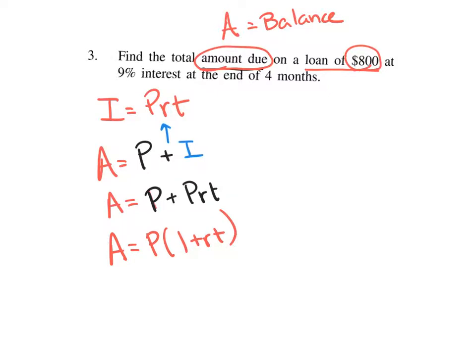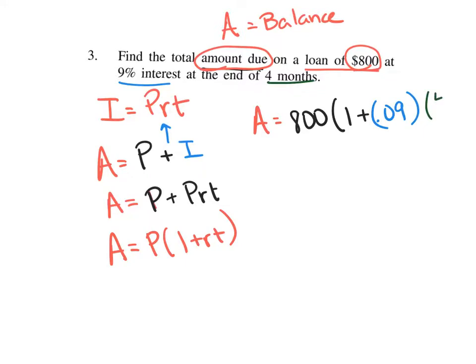This is how we calculate the amount due on a loan, or the balance of any kind of thing you borrow money from. Using simple interest, A equals the amount borrowed, $800, times 1 plus the rate of 9%, expressed as a decimal 0.09, times T. You're paying off this loan in 4 months, so T expressed in years is 4 divided by 12, which is one third.